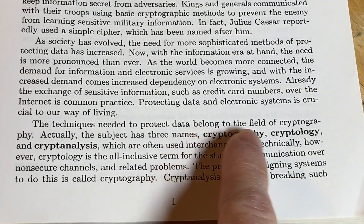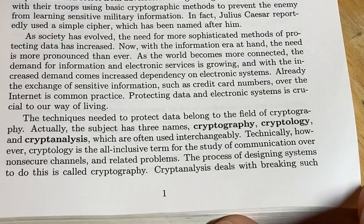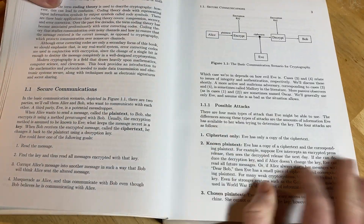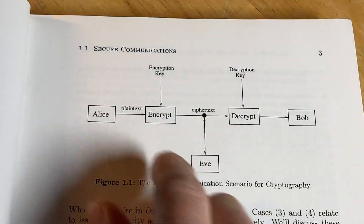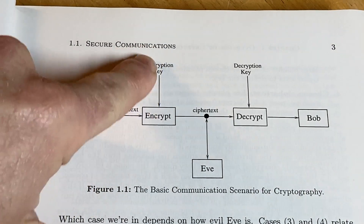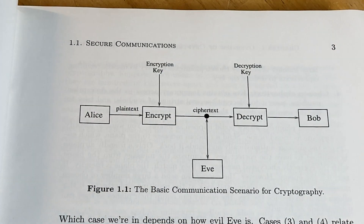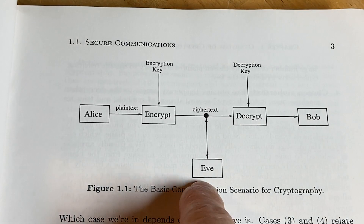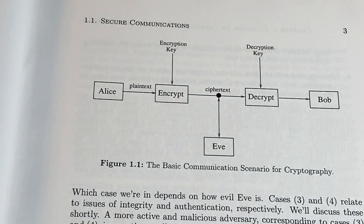The book notes that the techniques needed to protect data belong to the field of cryptography — also known as cryptology and cryptanalysis, terms often used interchangeably. The book gives a nice diagram: Alice has a friendly message, the plain text. She encrypts it using a key, turning it into ciphertext. Then Eve — who is evil, presumably the origin of the word 'eavesdropping' — tries to intercept it. Bob receives the ciphertext, uses a decryption key, and gets the original message back.